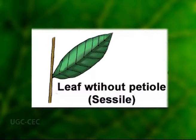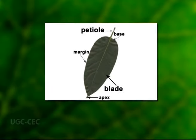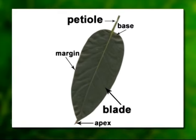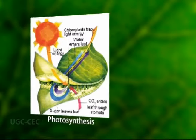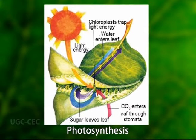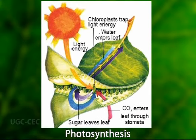A petiole may be absent, or the blade may not be laminar or flattened. The petiole mechanically links the leaf to the plant and provides the route for transfer of water and sugars to and from the leaf. The lamina is typically the location of the majority of photosynthesis.